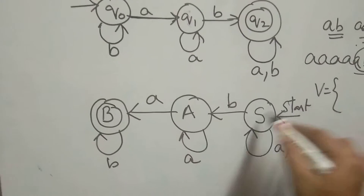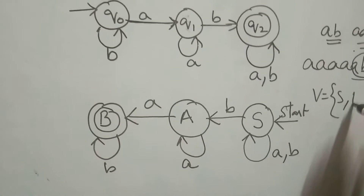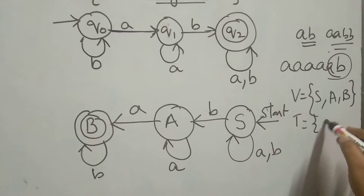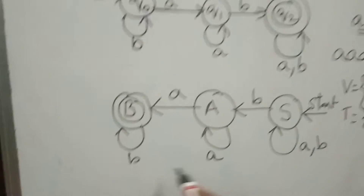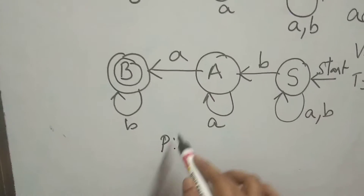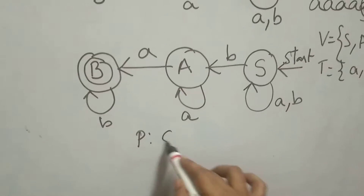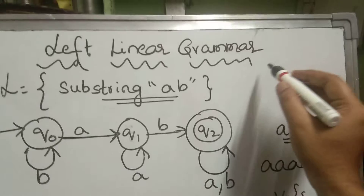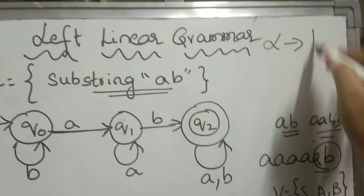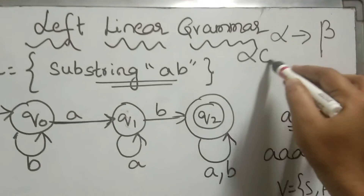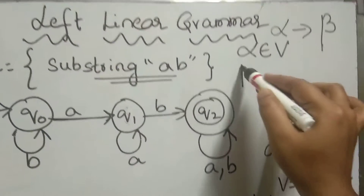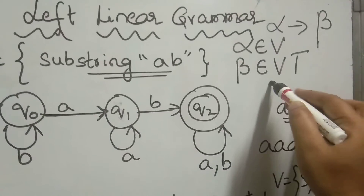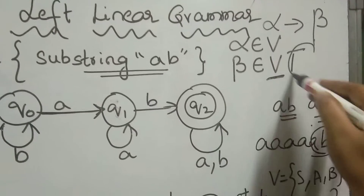Grammar: V is equal to {S, A, B}. T contains small 'a' and small 'b'. Now you have to write the production rules. For left linear grammar, the grammar must be in the form alpha tends to beta, where alpha belongs to variables and beta belongs to V union T. Here is the variable and that is the terminal.